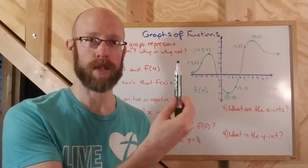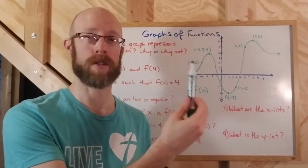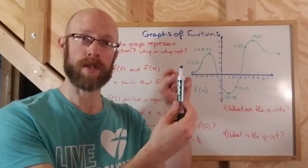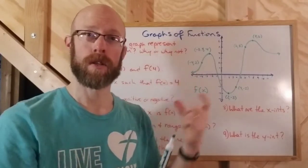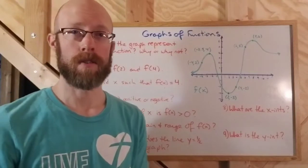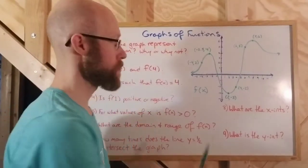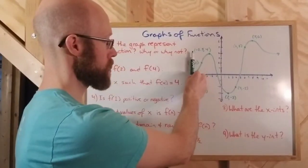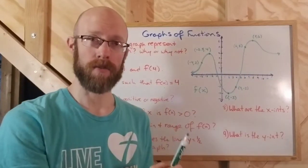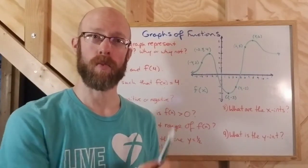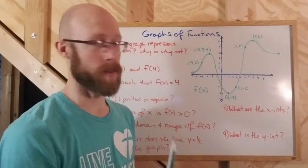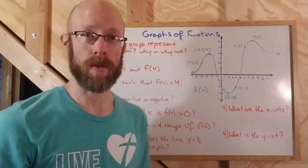The vertical line represents a single input, and every point on that vertical line would represent the output. But if there's two, there'd be two outputs, so we only want one intersection. We call this the vertical line test. The vertical line test is where we check the graph, and as long as every possible vertical line hits it once or zero times, then you have a function — and that's the case for this one.